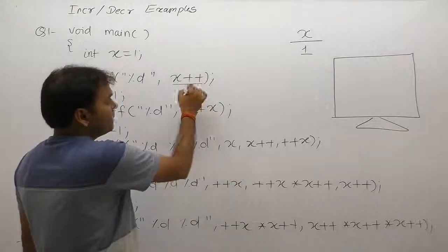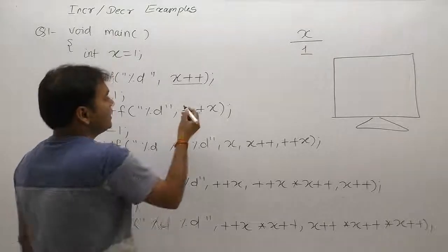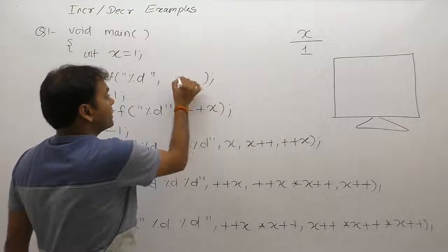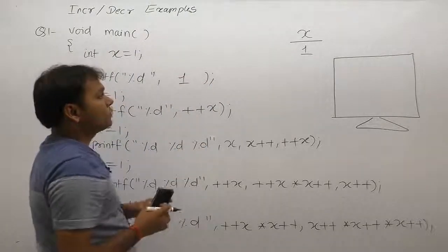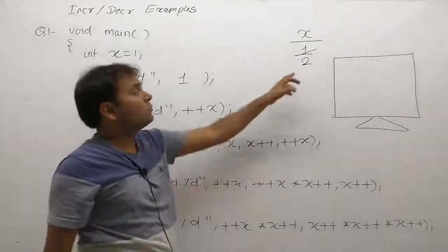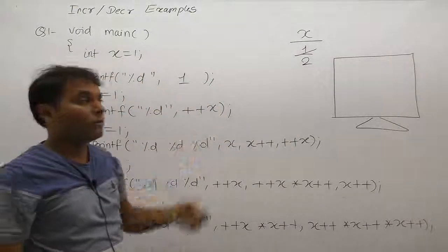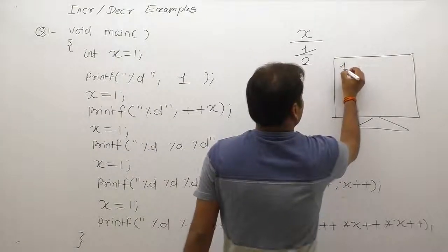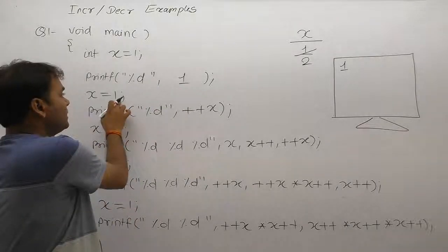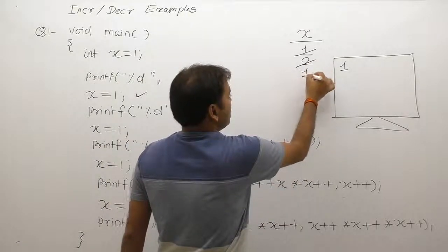What is the current value of x? Value of x is 1, so it is replaced by 1. Because of the post operation, x is replaced by 1 first, then x is incremented by 1, so x becomes 2. The final replaced value is 1, therefore printf displays only 1. This is the result of the first printf — it displays 1.